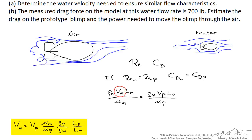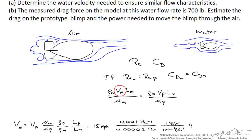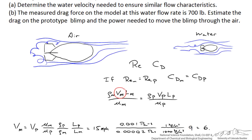Rearranging, we find the required water velocity equals the prototype velocity times the ratio of viscosities, the ratio of the densities, and the ratio of the length scales. Plugging in numbers: the full size blimp travels at 15 miles an hour; here's the viscosity of water, the viscosity of air, the density of air, the density of water, and the length scale ratio — the length of the prototype divided by the length of the model. This gives a value of 6.75 miles per hour. That is the speed at which water must move over the model blimp to ensure similar flow characteristics and equal coefficients of drag.